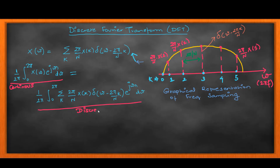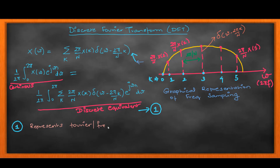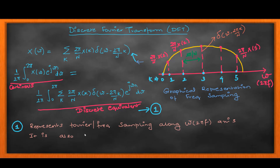This equation is both continuous and discrete at the same time. The left-hand side is a continuous form equation, and the right-hand side has a discrete equivalent. So equation 1 is both continuous and discrete. We are going to simplify this equation 1 to get our DFT. Today's class is about the DFT formulas, how they are derived, and the proof for derivation of DFT and IDFT — inverse discrete Fourier transform.